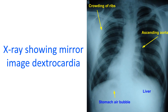If dextrocardia is not associated with left-right inversion of other structures of the body, then it is called isolated dextrocardia. The heart is most often abnormal in isolated dextrocardia. The opposite condition is known as isolated levocardia, which is also associated with gross structural abnormalities of the heart.